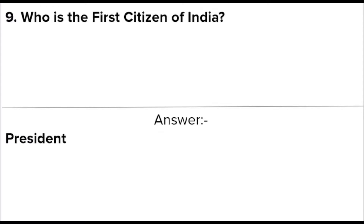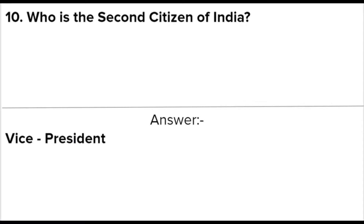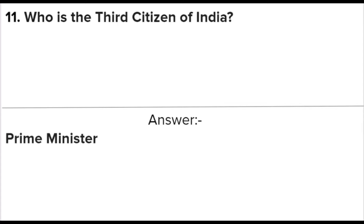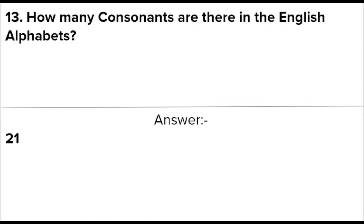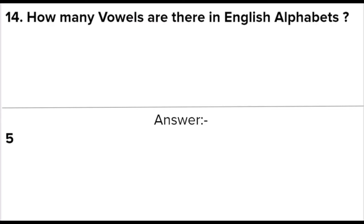Next question: Who is the president of USA in 2020? Answer: Joe Biden. He is from the Democratic Party. Next question: Who is the first citizen of India? Answer: President. Next question: Who is the third citizen of India? Answer: Prime Minister. Next question: How many letters are there in the English alphabets? Answer: 26. Next question: How many consonants are there in the English alphabets? Answer: 21.